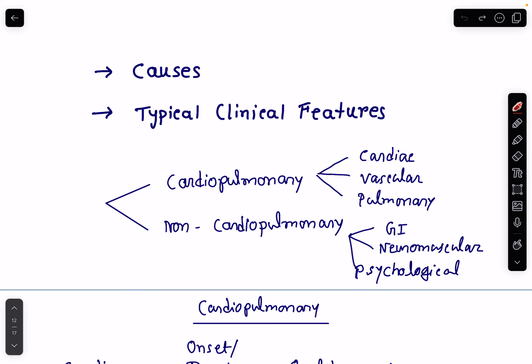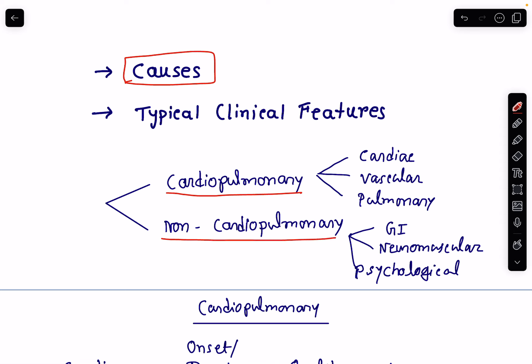Let's discuss about the causes. Broadly, the causes can be divided into cardiopulmonary causes and non-cardiopulmonary causes of chest pain. Cardiopulmonary causes can again be subdivided into cardiac causes — that is, diseases of the heart — vascular causes, and pulmonary causes. Non-cardiopulmonary causes can be due to problems in the gastrointestinal tract, neuromuscular diseases, or psychological diseases.